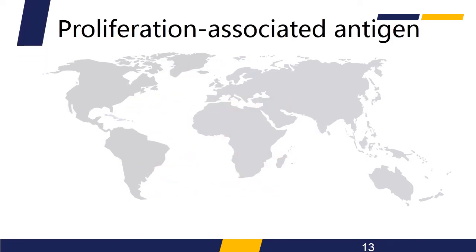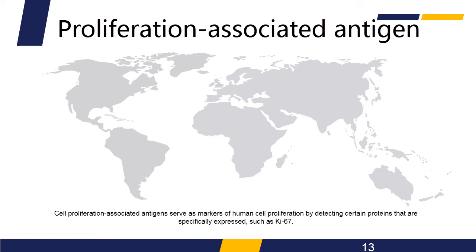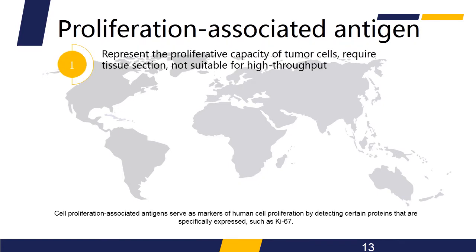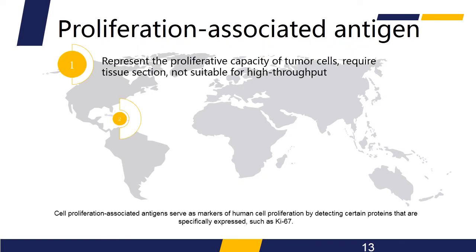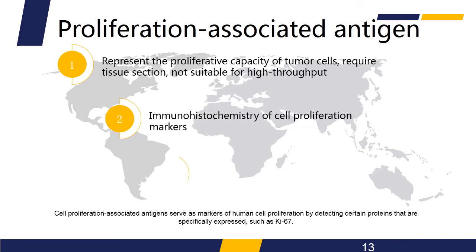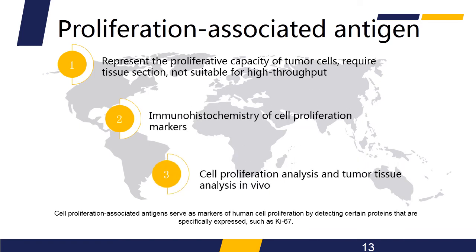Cell proliferation-associated antigens serve as markers of human cell proliferation by detecting certain proteins that are specifically expressed, such as Ki-67. Ki-67 is a nuclear cell proliferation-associated antigen expressed in all active stages of the cell cycle. Ki-67 detects proliferating cells in G1, S, G2, and mitosis, but not in the G0 resting phase.